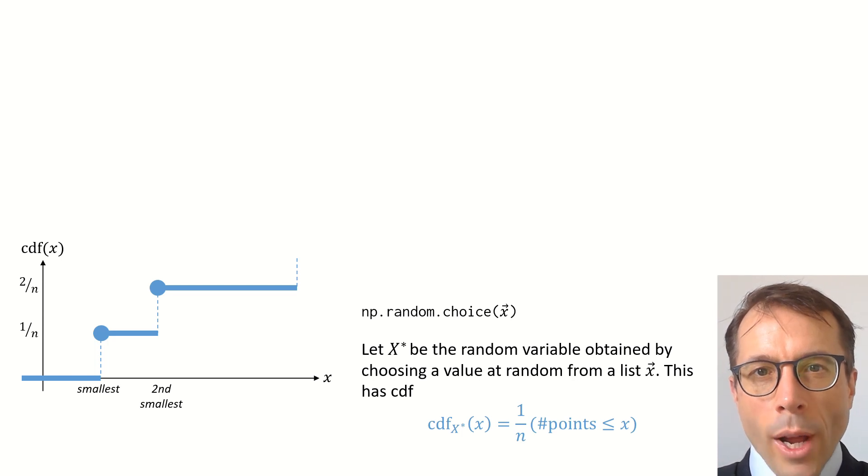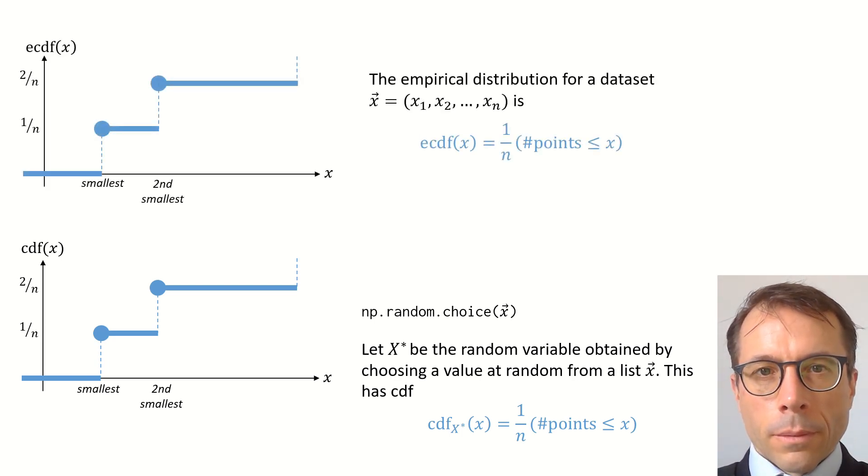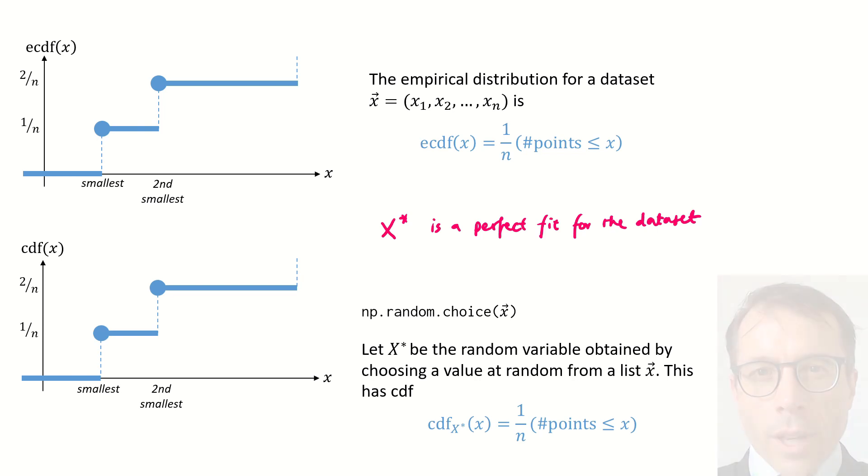In other words, we've got a random variable which is a perfect match for the data set's empirical cumulative distribution function. So, this answers the question we asked at the beginning of the video, how good a fit can we find for the data set? The answer is that we can find an absolutely perfect 100% spot-on fit, and we don't need to know any standard random variables or any probability modelling at all. We don't even need to know maximum likelihood estimation to find this fit.